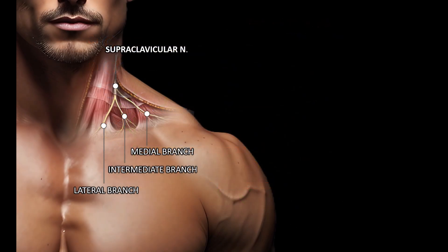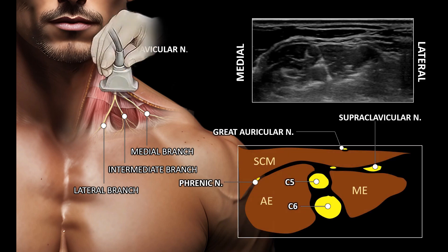A small hypoechoic structure can be identified originating from the root of C4 and lying superficial to the deep investing layer of cervical fascia at the level of the C5 and C6 nerve roots. Scanning caudally, this structure passes superficially over the belly of scalenus medius, deep and posterior to the sternocleidomastoid muscle, and is often seen to divide into terminal superficial branches as we slide our transducer distally.